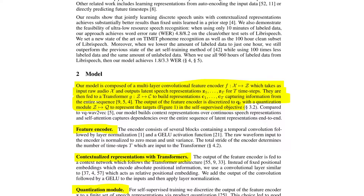Moving on to the model section: the model is composed of a multi-layer convolutional feature encoder F, which takes raw audio X as input and outputs latent speech representations Z1 through ZT for T time steps. After that, a transformer builds representations from Z1 through ZT, and its role is to capture information from the entire sequence.